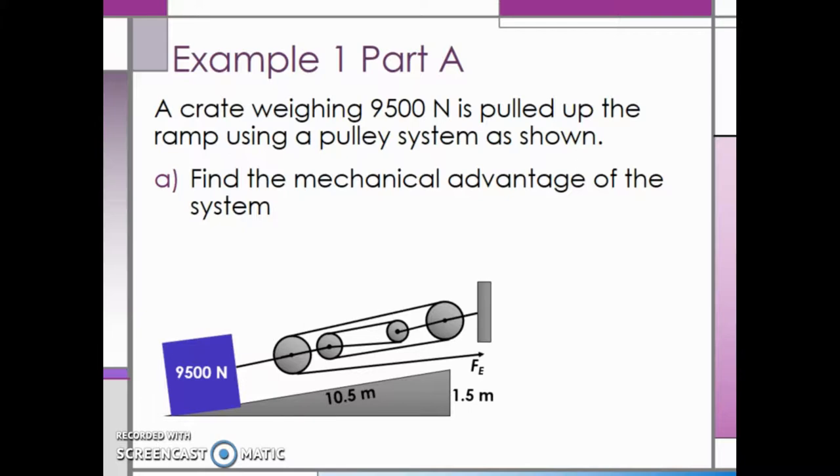In order to find the total mechanical advantage, we need to find the mechanical advantage of each of the individual simple machines. In this compound machine, we have an inclined plane, or ramp, and we also have a pulley system. Therefore, the total mechanical advantage will be the mechanical advantage of the ramp multiplied by the mechanical advantage of the pulley system.